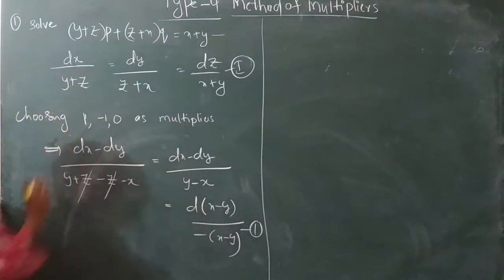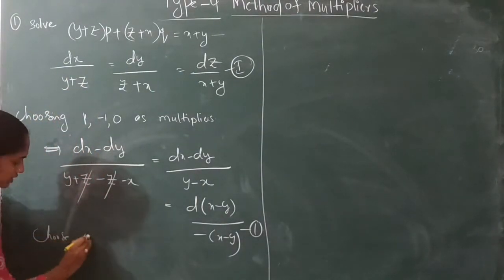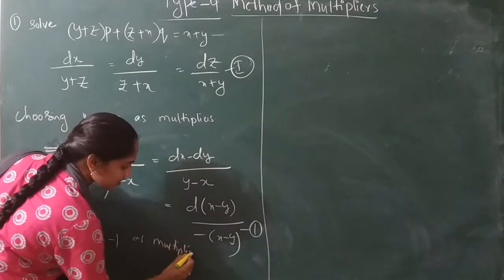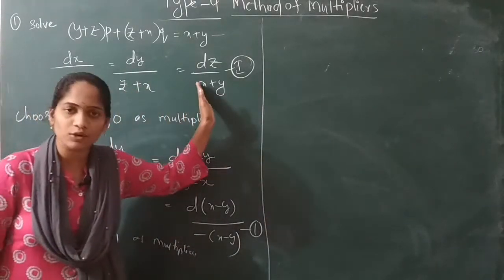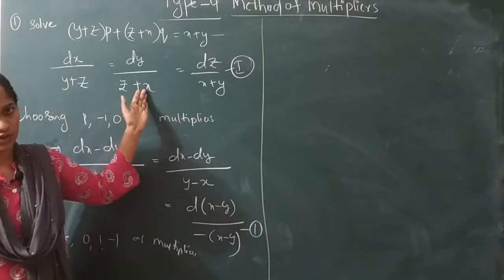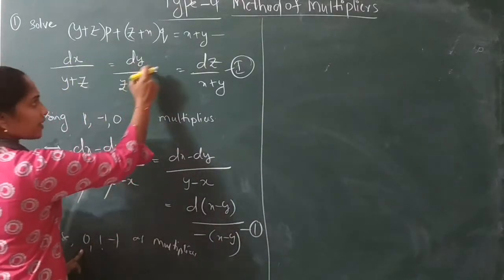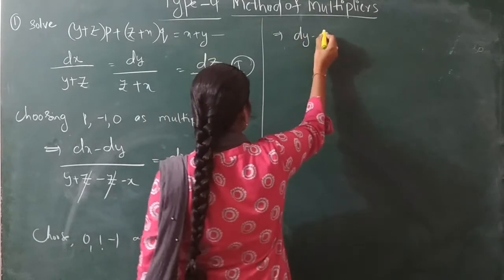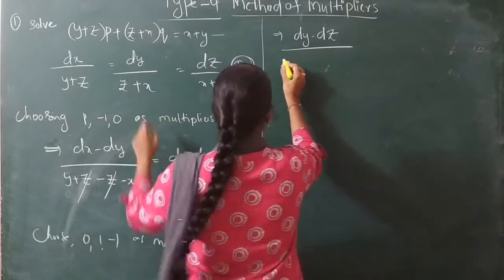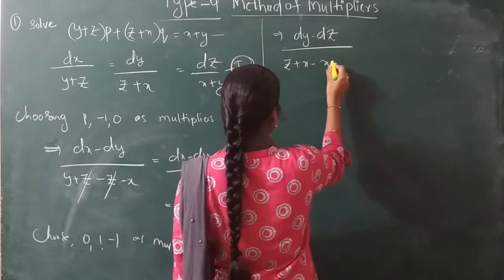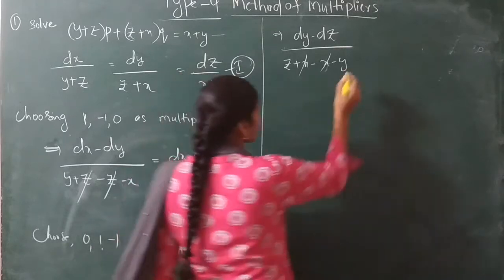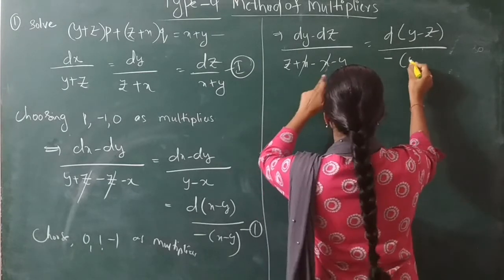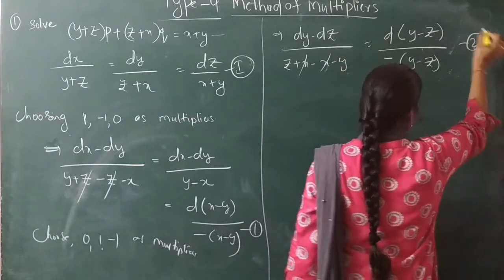Again, choose another set of multipliers: 0, 1, -1 as multipliers. This makes dx zero. The numerator becomes dy minus dz, and the denominator becomes (z+x) minus (x+y), so x cancels, giving z minus y. Taking d as common: d(y minus z) over minus(y minus z). Let this be equation 2.